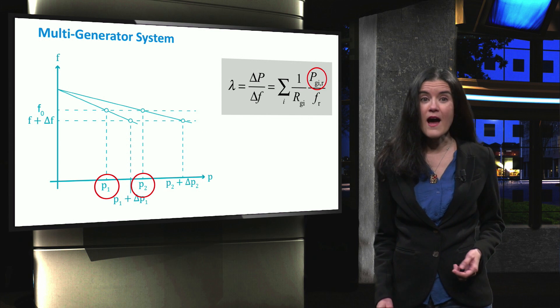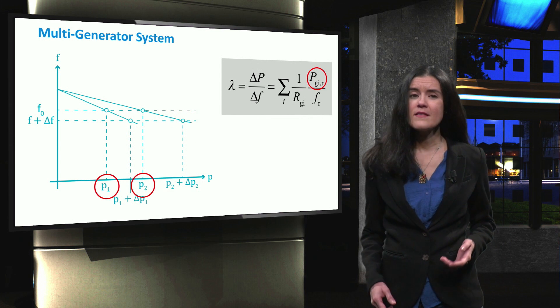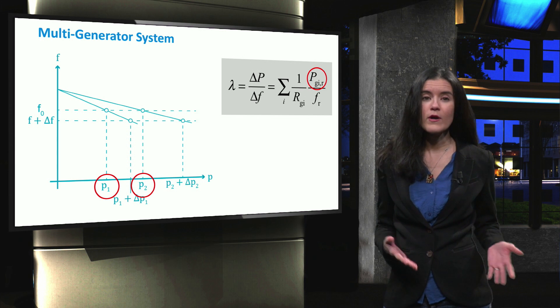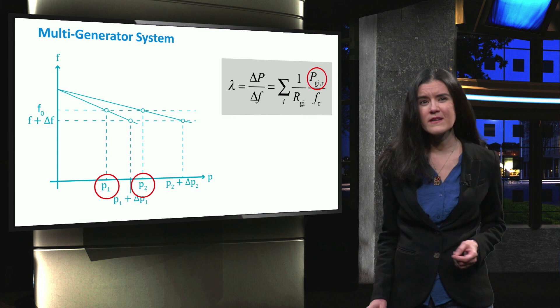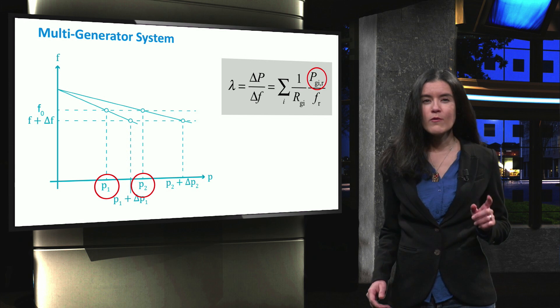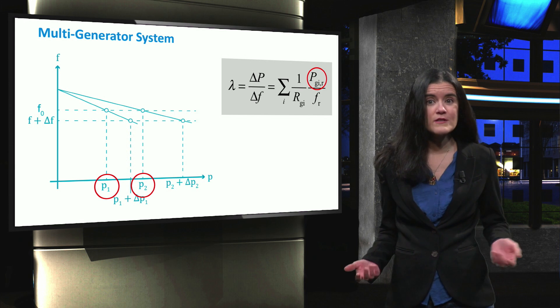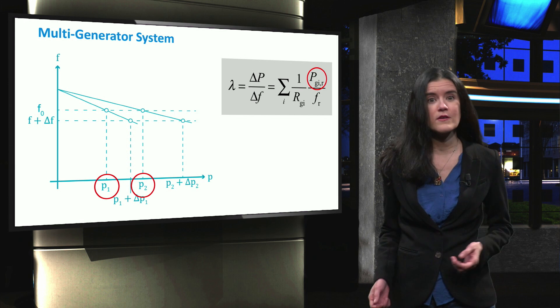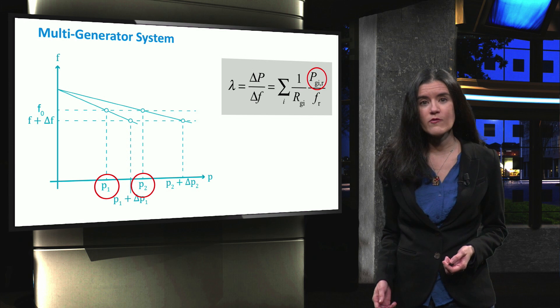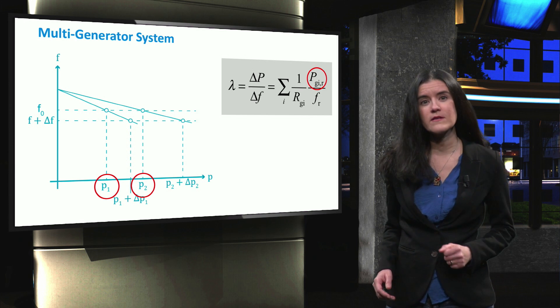It is important to note that after primary control takes place, the power balance is restored at a lower or higher frequency, which is not a desirable operation condition. We want to re-establish the frequency as close as possible to 50 or 60 Hz to avoid damages to equipment and loads, but that is done with a different mechanism.